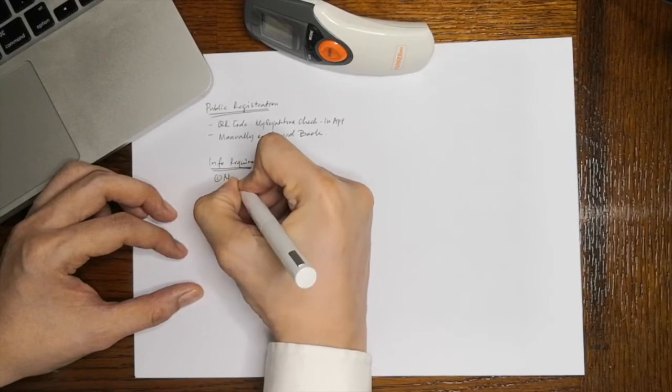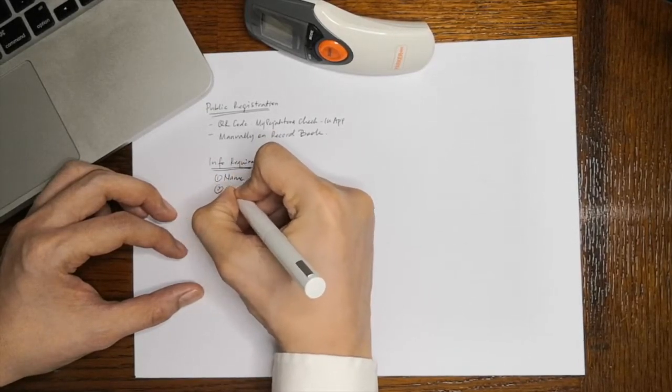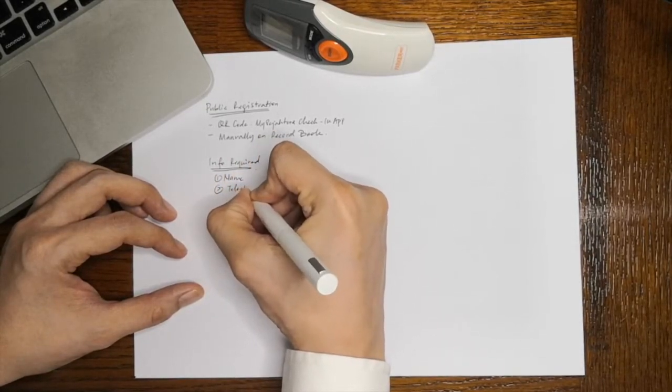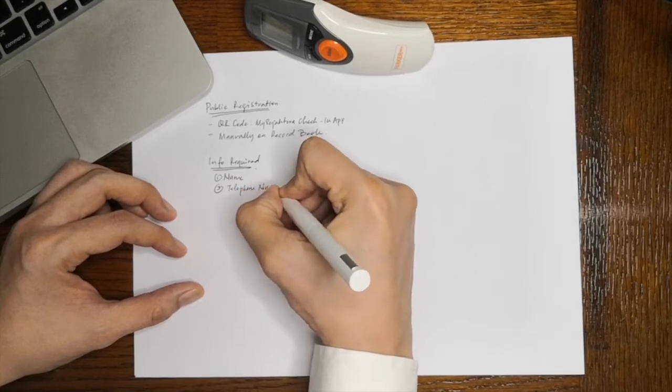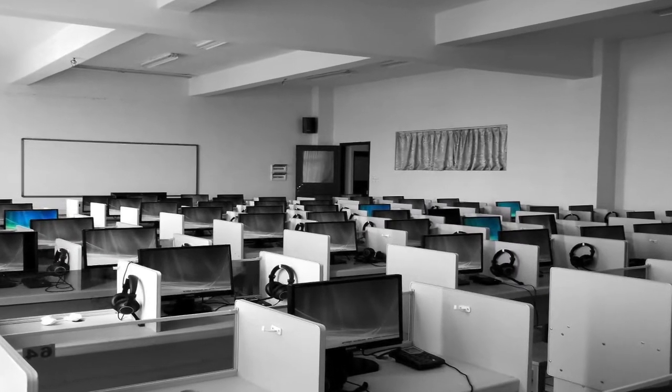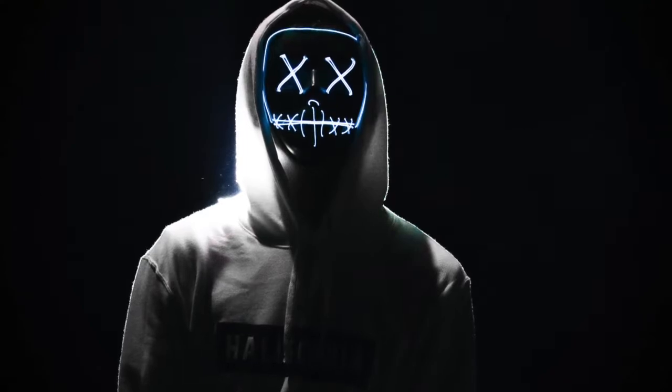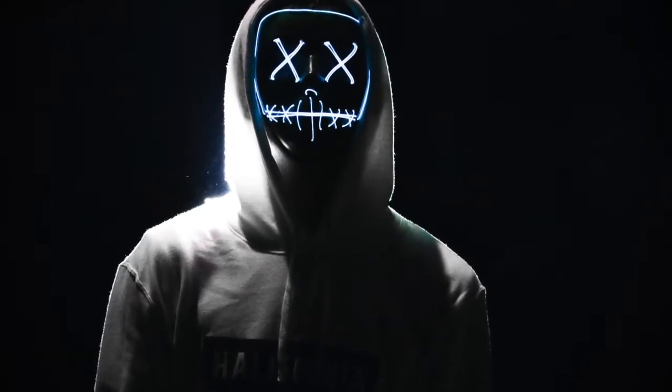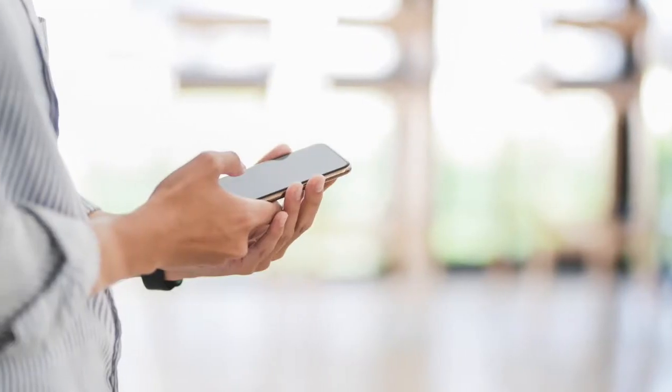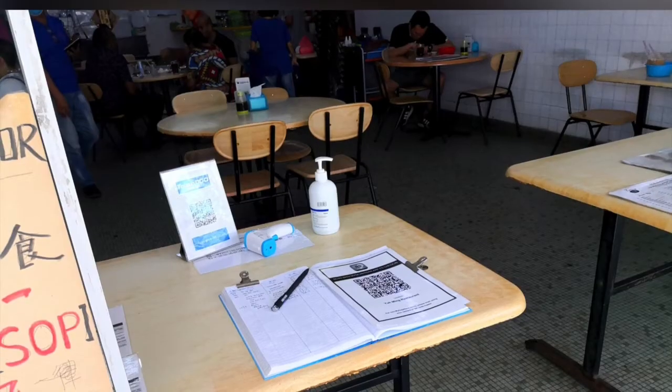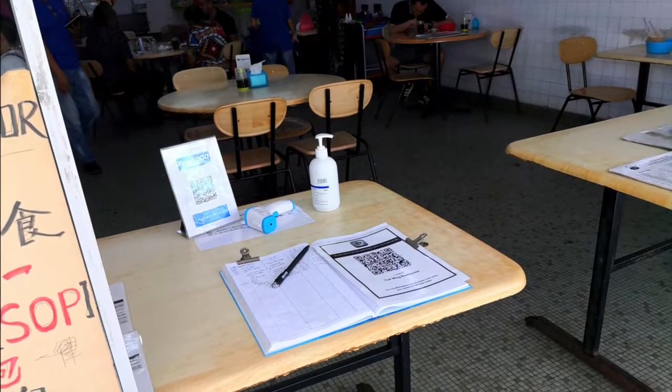Here comes the concern part. If these two information is sufficient for the Government to contact you, it will also be sufficient for any telemarketeers or scammers to do the same. One can simply take his phone out and take a snapshot of the record book to gain access of everyone's contact.